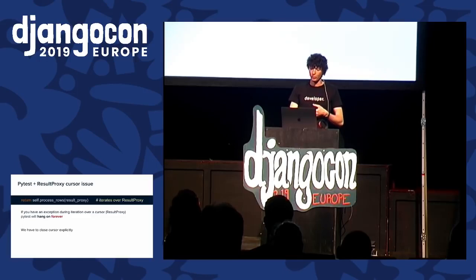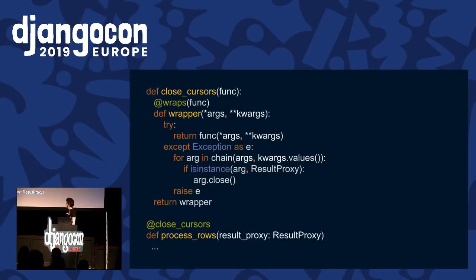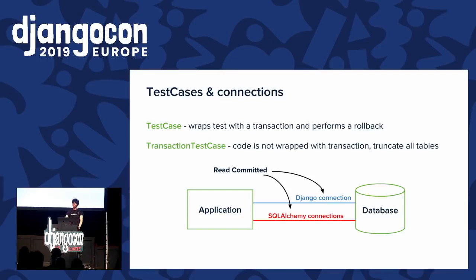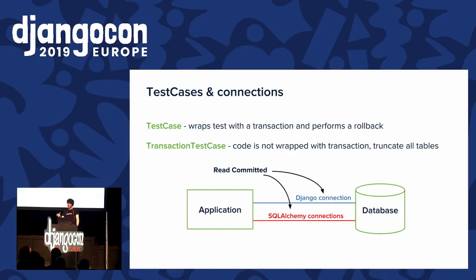One solution is to write a decorator applied to functions that iterate and might raise exceptions — it closes any ResultProxy cursor on error. The most important thing to keep in mind is that you have two connections, each with its own transaction isolation level. If you use Django's TestCase and populate the database with model_mommy or factory_boy, it happens in the Django connection. Django creates a transaction at the start of each test but doesn't commit it, then rolls back. SQLAlchemy doesn't see that uncommitted data — so this is a real issue.